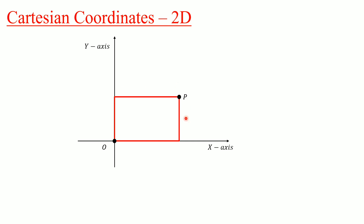The width of the rectangle — the distance along the x-axis — is our x-coordinate, and its length along the y-axis is the y-coordinate. This is how the coordinates of point P are given. The coordinates of P are (x, y).